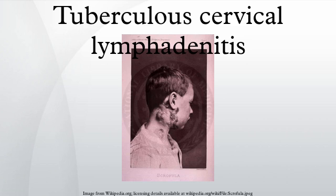Mycobacterial cervical lymphadenitis, also known as scrofula or king's evil, refers to a lymphadenitis of the cervical lymph nodes associated with tuberculosis as well as non-tuberculous mycobacteria. Scrofula is the term used for lymphadenopathy of the neck, usually as a result of an infection in the lymph nodes, known as lymphadenitis.